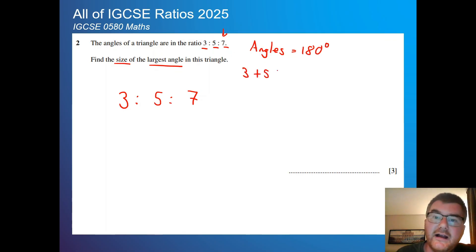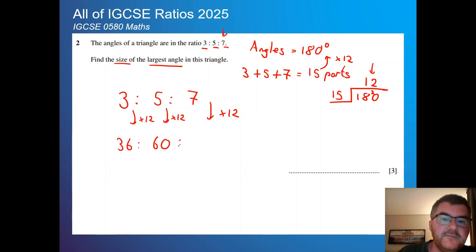Now if I look at how many parts of my ratio I have, I have 3 plus 5 plus 7. So if I add that together, I get 15 parts. So what I'm looking for here is what do I multiply 15 by to actually get to 180? And that missing number is 12. Once I know that, then I can multiply each of these numbers by 12. So 12 times 3 is 36, 12 times 5 is 60, 12 times 7 is 84. So the largest angle will be 84 degrees.